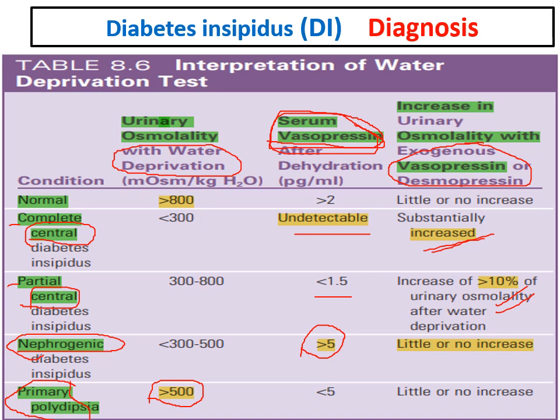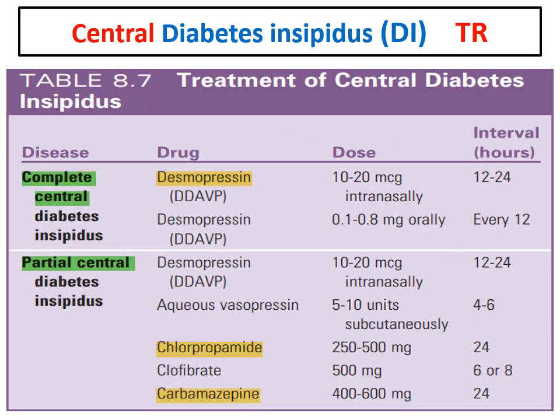To conclude: primary polydipsia is diagnosed by water deprivation test (urine osmolality goes high). Next, measure serum vasopressin — it will be high in nephrogenic DI but very low in central DI. To confirm central DI, give exogenous vasopressin or desmopressin, and urine osmolality will rise.